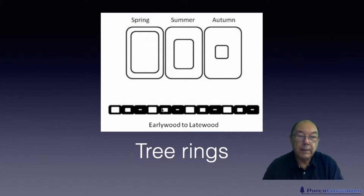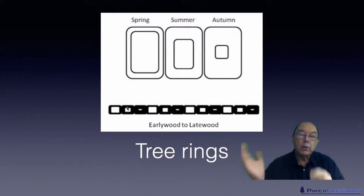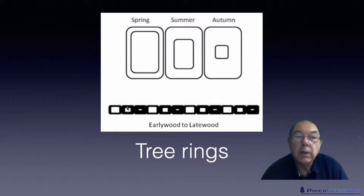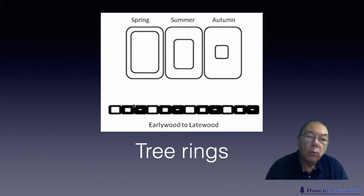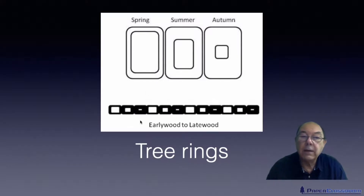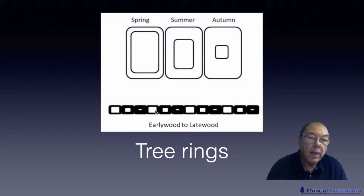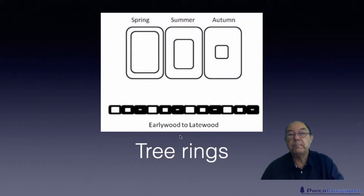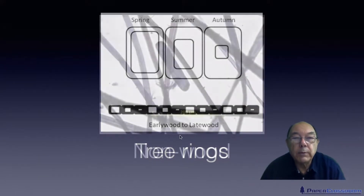Then the fibers tail off, and then a sudden change. So when you chop a tree or a branch and you see the rings, what you're really seeing is this interface between the end of one season and the beginning of the next.